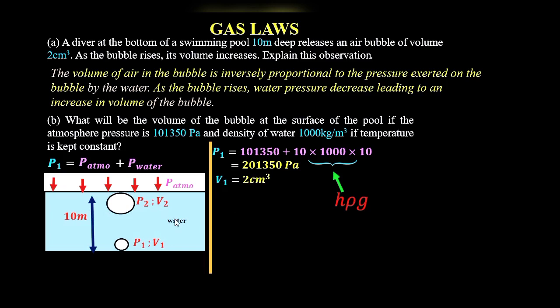Now remember, for this question we are required to get the volume of the bubble at the surface, so that means we need the value of V₂. So do we know P₂? P₂ is the pressure at the surface. The pressure at the surface, at this point, we only have atmospheric pressure acting on the bubble. So we have P₂ equal to atmospheric pressure, and that is 101,350 Pa.